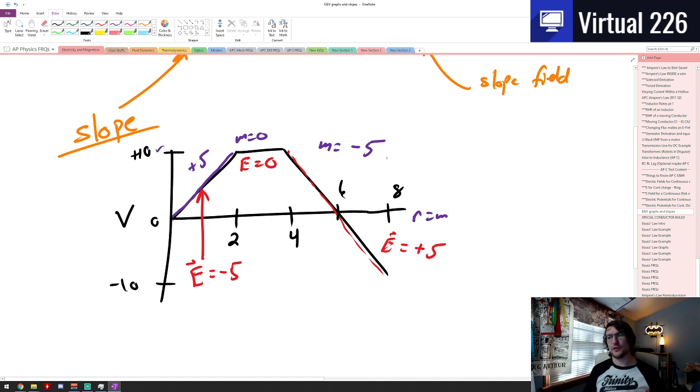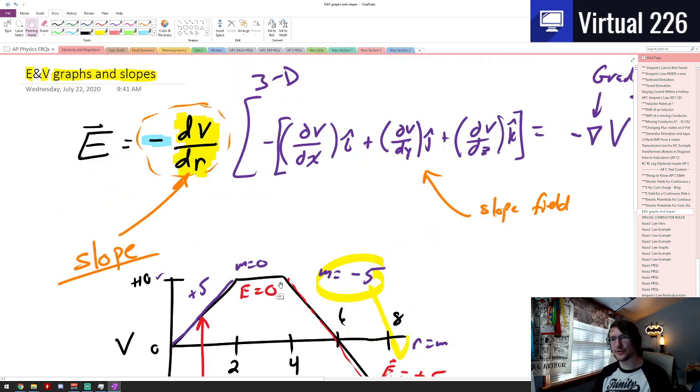Your electric field is just the negative of the slope. It's just the opposite of the slope value giving your electric field, which is kind of a cool thing.